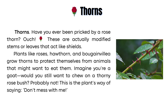Now let's look at thorns. Have you ever been pricked by a rose thorn? Ouch! These are actually modified stems or leaves that act like shields. Plants like roses, hawthorn, and bougainvillea grow thorns to protect themselves from animals that might want to eat them. Imagine you're a goat — would you still want to chew on a thorny rose bush? Probably not. This is the plant's way of saying, don't mess with me.